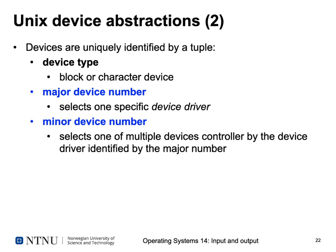Devices are identified by a tuple. Inside the kernel there is a table which assigns a set of numbers to each device. There is often a separate table for character devices and another for block devices. The first element of the tuple is a bit indicating the device type — either block or character — so the kernel looks up the required information in the appropriate table. Each controller has two numbers called device numbers: the major device number selects one specific device driver.